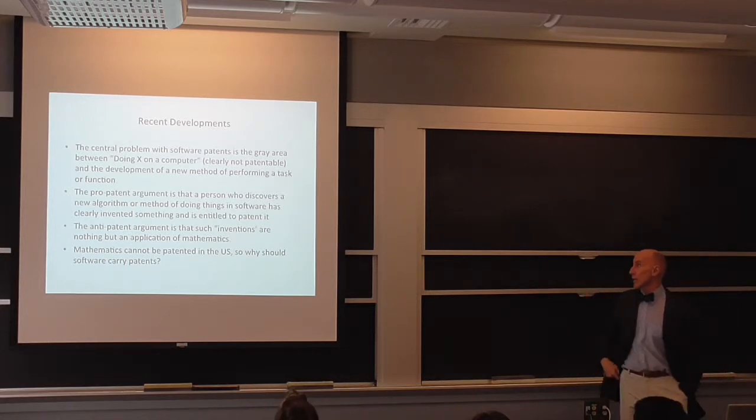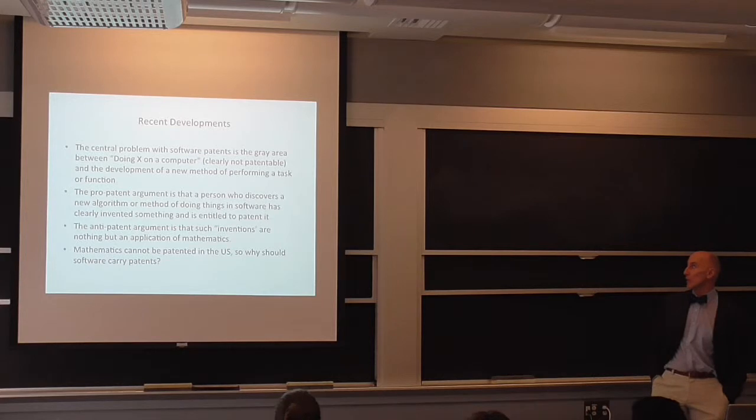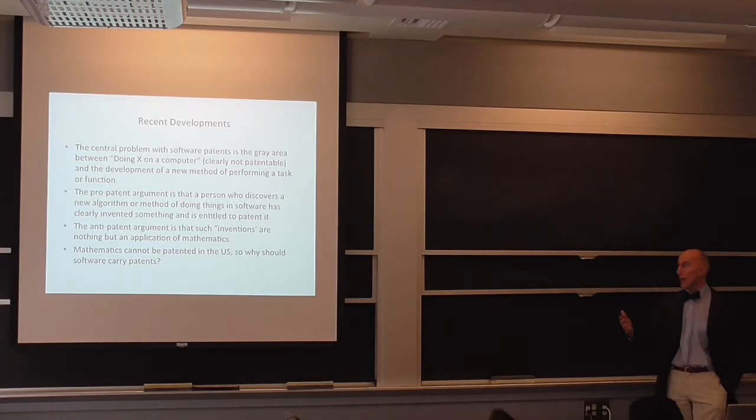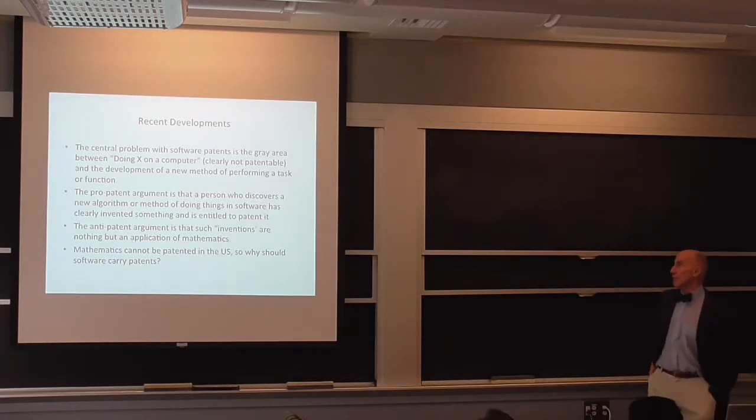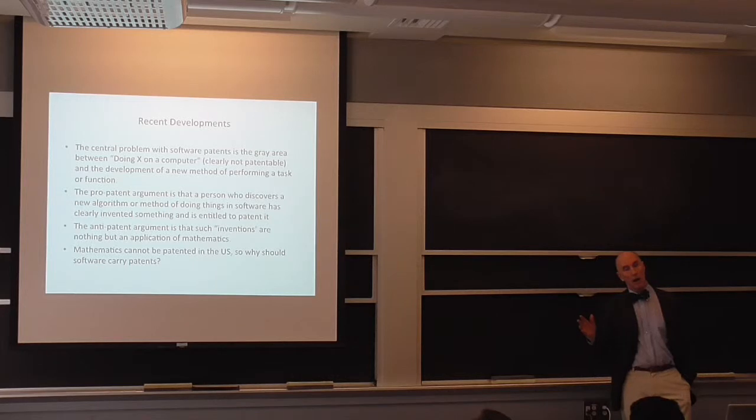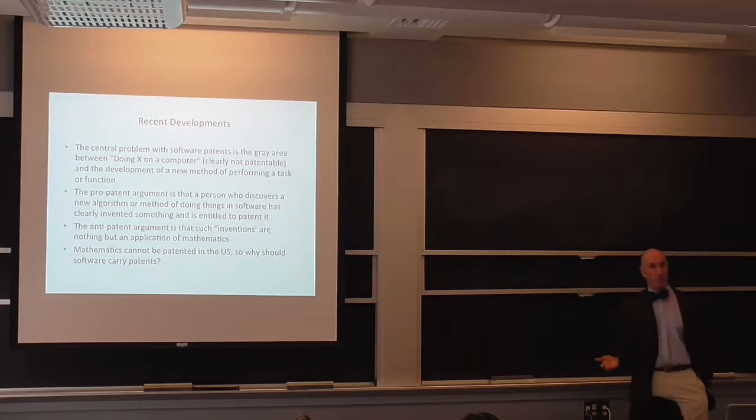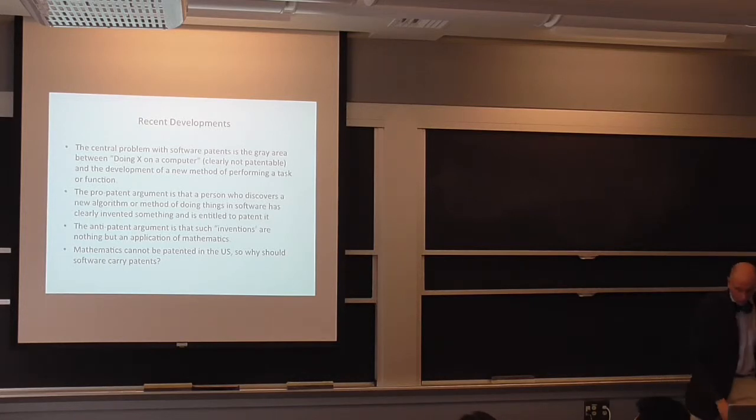The central problem with software patents is in this gray area between doing X on a computer, which is not patentable, and the development of a new method of performing a task or function, which Wenying genuinely does. The pro-patent argument is that a person who discovers a new algorithm, a method of doing things in software, has clearly invented something that's useful and novel, and under Section 101 is, at least on its face, entitled to patent protection. The anti-patent argument is that such inventions are nothing but an application of mathematics which the Supreme Court has always said are in the nature of a natural law and therefore, like gravity or like calculating the speed of light or calculating the value of pi are not patentable. Mathematics cannot be patented in the U.S., so why should software carry patents?